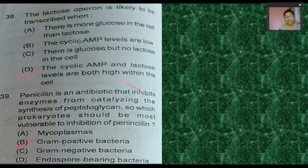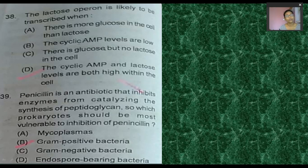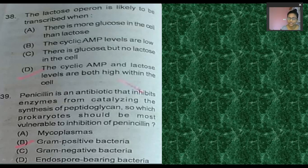Which prokaryotes should be most vulnerable to inhibition by penicillin? Gram-negative bacteria have a different condition, and endospore-bearing bacteria also have a different condition. The answer is gram-positive bacteria, because they have the thickest peptidoglycan layer. This was question number 39 in the 2018 exam.